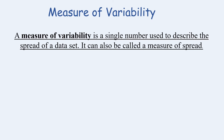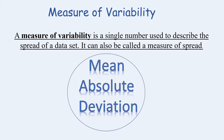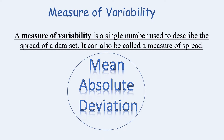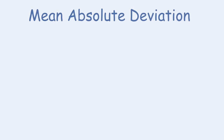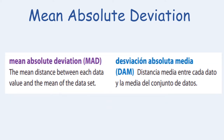Now we're going to look at the measure of variability. A measure of variability is a single number used to describe the spread of a data set, also called a measure of spread. We're going to investigate the mean absolute deviation. The mean absolute deviation is the mean distance between each data point and the mean of the data set.